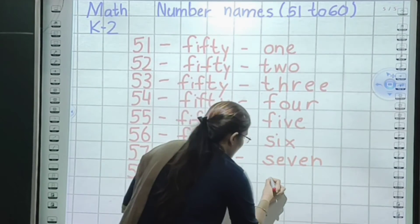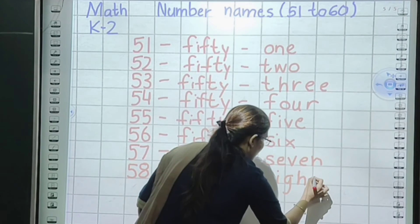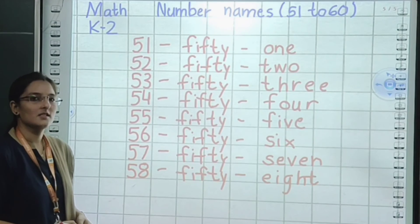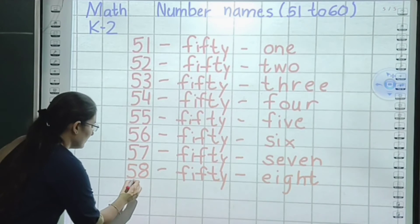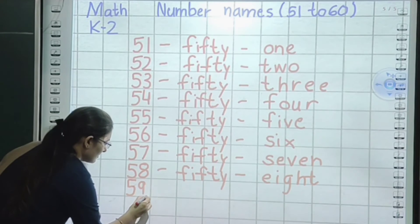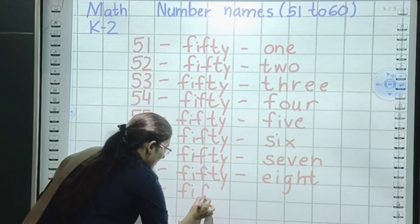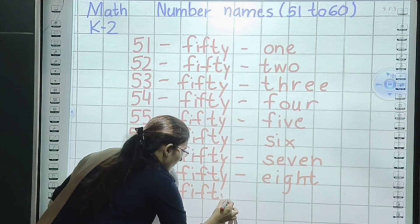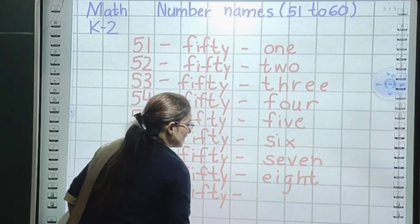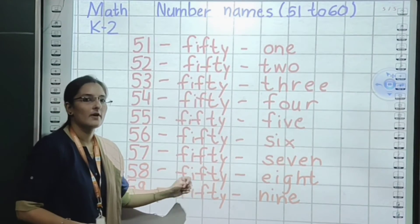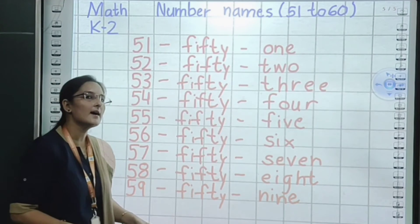Move on. Next number: 58. Small sleeping line. Again we will copy the same spelling: F, I, F, T — fifty. Small sleeping line. Spelling of 8: E, I, G, H, T — eight. So 58 is fifty-eight.